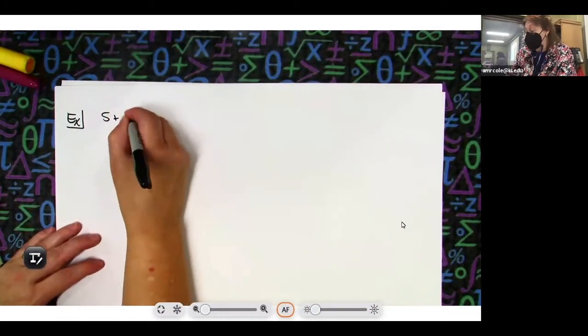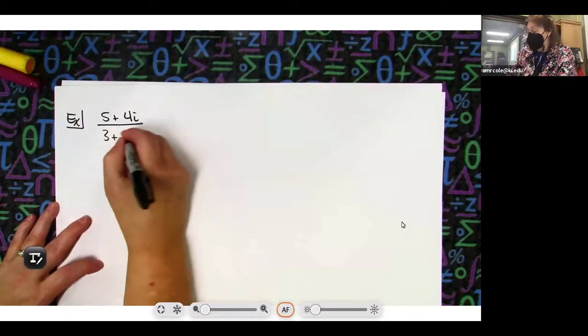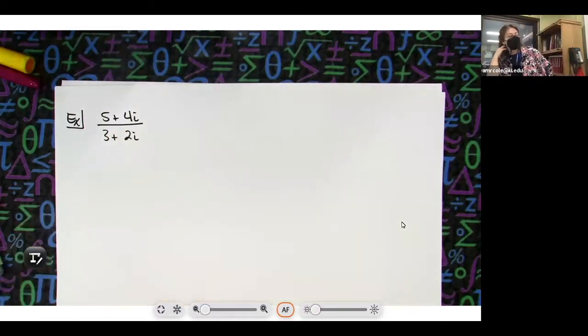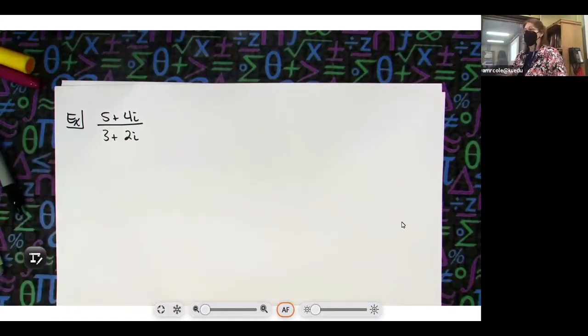5 plus 4i and then 3 plus 2i. I want to multiply by the conjugate to get this to a simplified answer, so I'm going to choose the opposite sign.